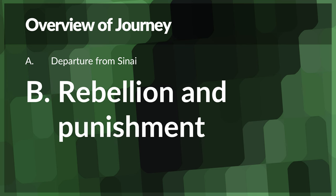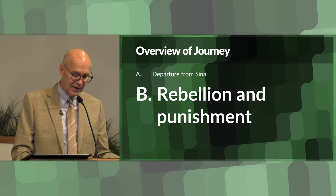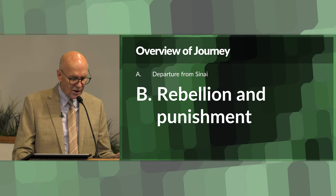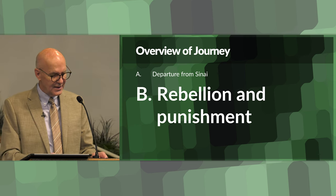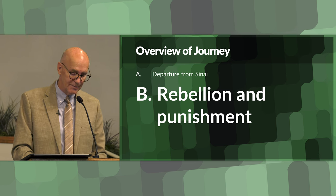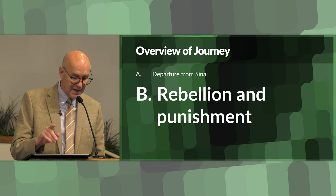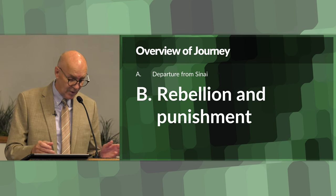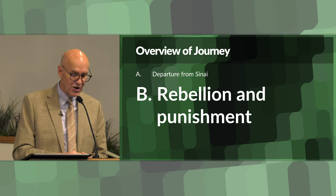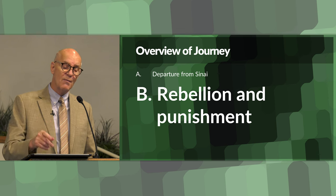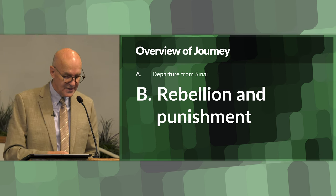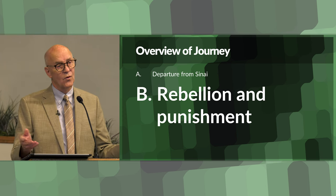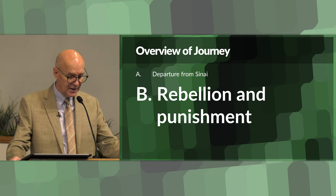We also have rebellion and punishment. The journey was marked by repeated instances of rebellion and lack of faith among the Israelites, including complaints about hardships, longing for Egypt, challenges to Moses's leadership, and the refusal to enter Canaan after the negative report of the spies. These acts of disobedience led to divine punishment — including the decree that the adult generation who left Egypt would not enter the promised land, but would instead wander until they died in the wilderness. As we know from reading the books, this took approximately 40 years.